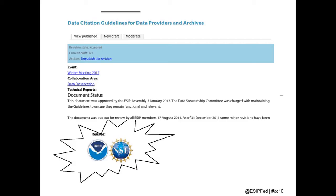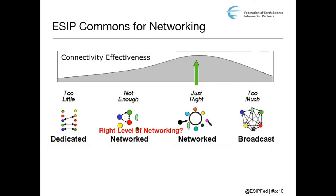One of our big successes with the ESIP Commons was the data citation guidelines our community came up with. They shared them through the ESIP Commons and both NOAA and NSF picked these up and reused them for themselves. We thought this was a big win and really an example of the right kind of networking — people were able to find the information they needed, remix it so that it fit for their agency, and take it and go with it.